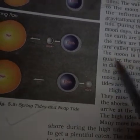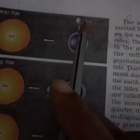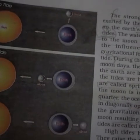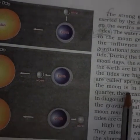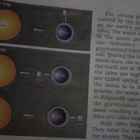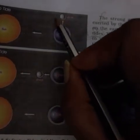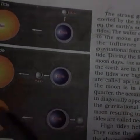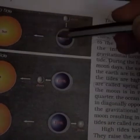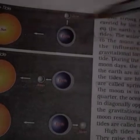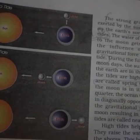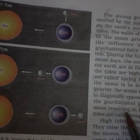But when the moon is in its first and last quarter — when only one-fourth of the moon is visible — the ocean waters get drawn in diagonally opposite directions. The direction of the sun's pull becomes opposite and goes diagonally. Ocean water gets drawn in diagonally opposite directions by the gravitational pull of the sun and moon, resulting in low tides called neap tides.